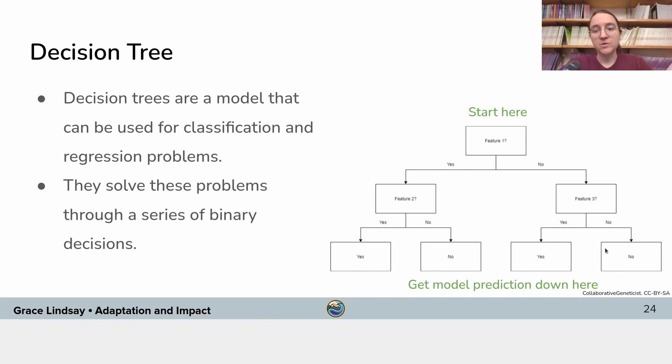But you can also use this for regression. So in that case, what you get at the bottom here are different values that would be the output of the model. So these decision trees learn to solve an input-output relationship, learn to fit that input-output relationship by making a series of binary decisions.